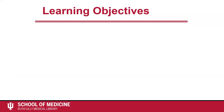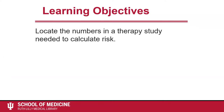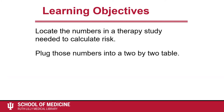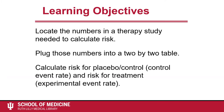The learning objectives for this video are: locate the numbers in a therapy study needed to calculate risk, plug those numbers into a two-by-two table, calculate risk for placebo control (control event rate), and risk for treatment (experimental event rate).